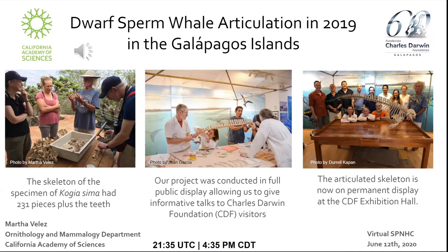We first laid down all the pieces of the skeleton on a table to have a visual map of how the skeleton should look. The skeleton consisted of 231 pieces plus teeth. We used specialized epoxies and connecting materials like wires to reconstruct this rare whale specimen for public display. My days consisted of carefully drilling vertebrae, gluing bones, and casting small missing bones from epoxy clay to create the complete skeleton. As the only Spanish-speaking scientist on the team, I often conducted informative talks for visitors of the Charles Darwin Foundation, explaining the reconstruction process and performing demonstrations of echolocation using a tuning fork to show how whales and dolphins listen through vibration in the lower jaws.